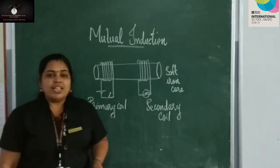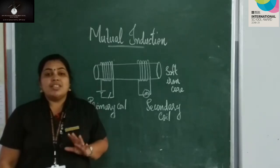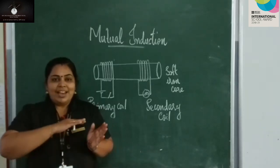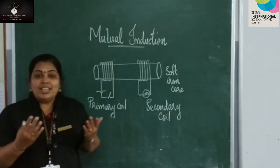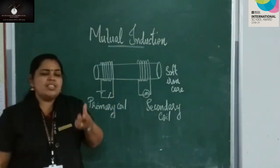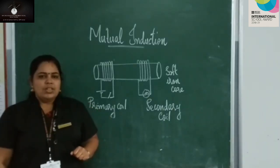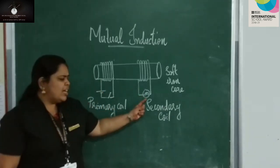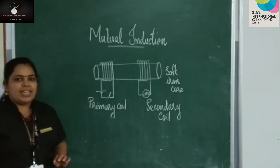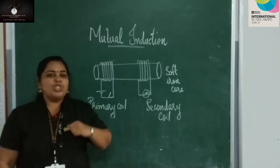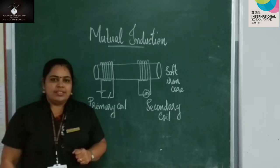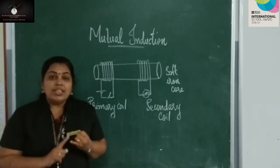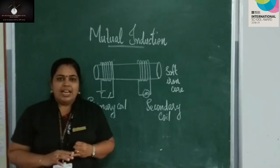It's a direct current. What is the speciality of direct current? It does not change its direction. Direct current does not change its direction. Once the current flows steadily, there is no change in the flux. That is why the bulb is off. If you want to glow the bulb continuously, you have to turn the switch on and off continuously.